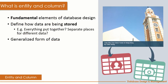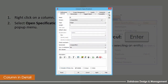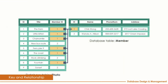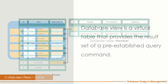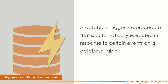We will walk through what is an entity and column, and then talk about entity properties and columns in detail. We will also cover the concept of different levels of the entity relationship diagram — logical, conceptual, and physical. After that, keys and relationships will be covered. The database view is also a very important concept in database design and administration. Triggers and stored procedures will also be covered.